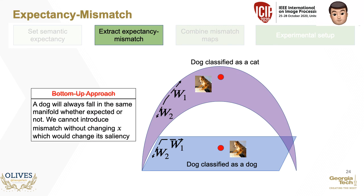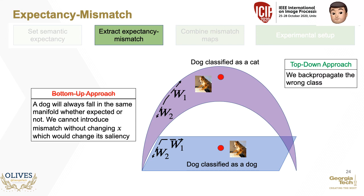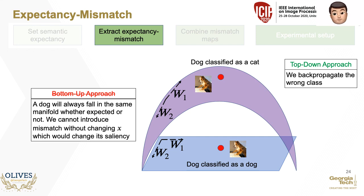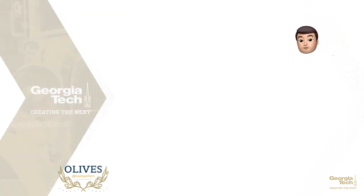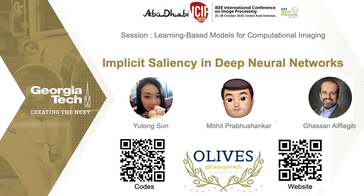From a bottom-up approach, an input image X can project onto a single manifold. On the other hand, expectancy mismatch can be introduced by backpropagating all trained classes, even incorrect ones — like the cat class when the input was actually a dog. I now hand over to my co-author Yutong, who will bring this home.